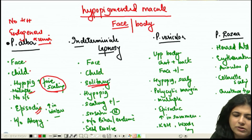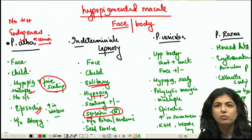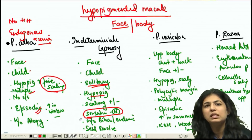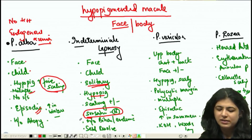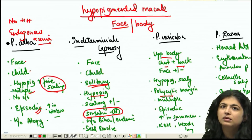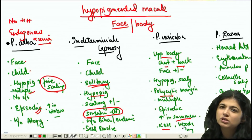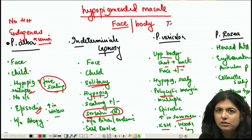Indeterminate leprosy will mainly be a solitary hypopigmented lesion. Despite being leprosy, sensation will be normal in this patient. There will be a history of residence in an endemic area like Bihar, Jharkhand, or Chhattisgarh, and 75% of indeterminate leprosy resolves on its own. For Pityriasis versicolor — upper body, chest and back, polycyclic margins, increases in summers, spaghetti and meatball appearance on KOH, pale blue or pale green appearance on Woods lamp. You treat it with topical and oral antifungals.